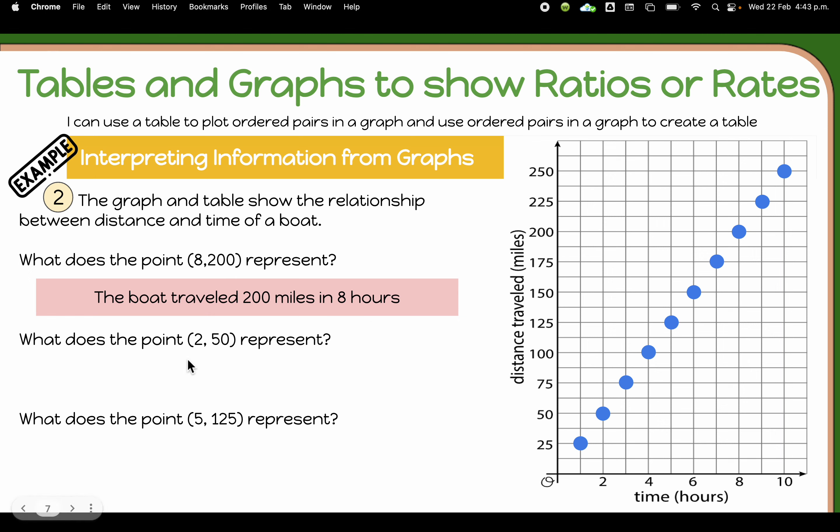What does the point 2,50 represent? Hopefully you say that it's the boat traveling 50 miles in 2 hours. And then the last one, 5 and 125. And hopefully you get that the boat traveled 125 miles in 5 hours.